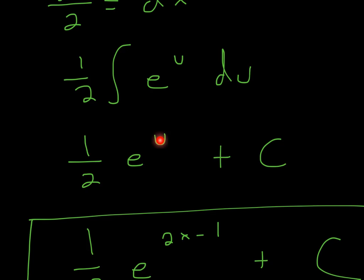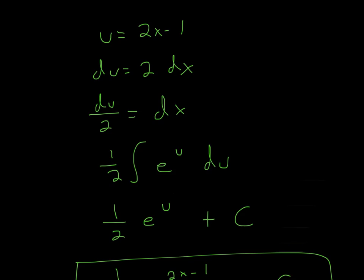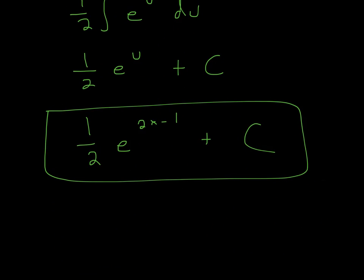Because the u has to be substituted back in. So I said that u is 2x minus 1. So I'm going to plug that back in, so it's 2x minus 1. And then never forget the C. So that's the actual answer, and I hope that helped, and thanks for watching.